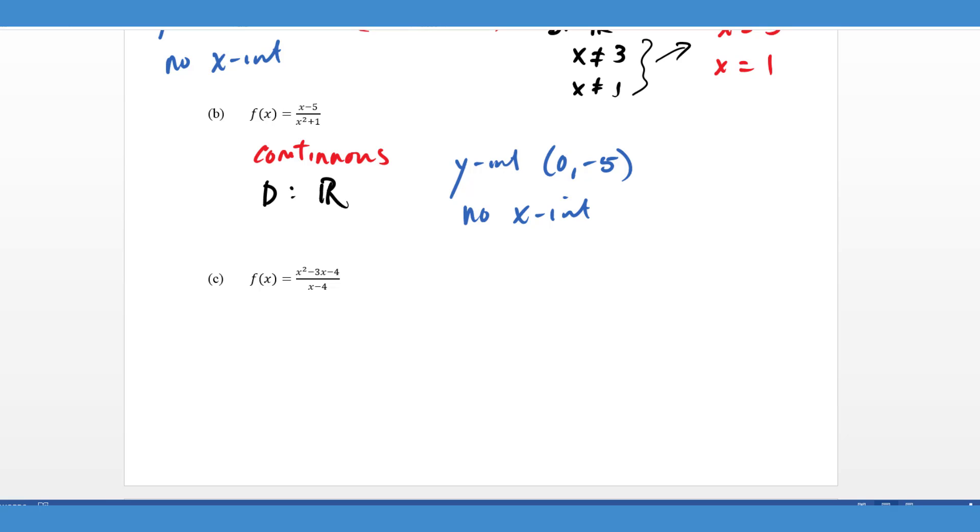Lastly, for this one, we need to factor and you notice that we have some removable discontinuity here. Of course you notice that the simplified function is x plus one. If you graph this, it's going to look like a line, even though there's a quadratic in the numerator. But since it's removable, what that's going to do is it's going to look like a hole and there's going to be a hole where it's undefined. In this case, x equals to four. So that's where the hole is going to be. The domain is going to be all real numbers except x cannot equal to four.